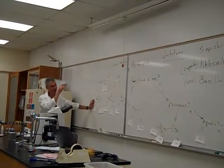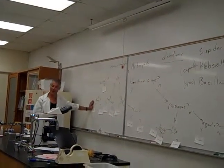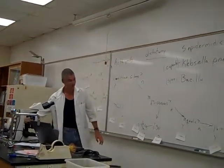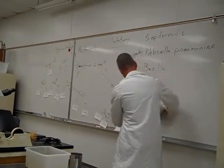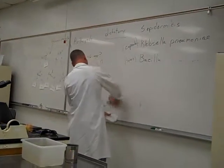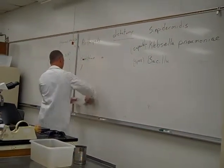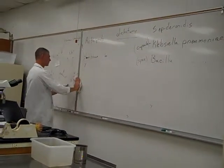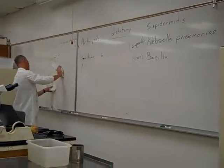And we're going to use this whole dichotomous key method to figure out what you've got for an unknown. Okay, bring your minds back to bacteria and away from bugs. So are you going to want us to make up our own? Oh yeah, you're going to make your own key. But I'll do one together with you.